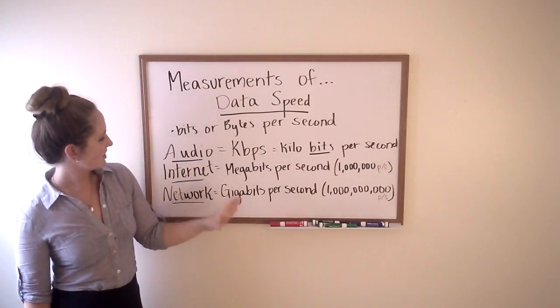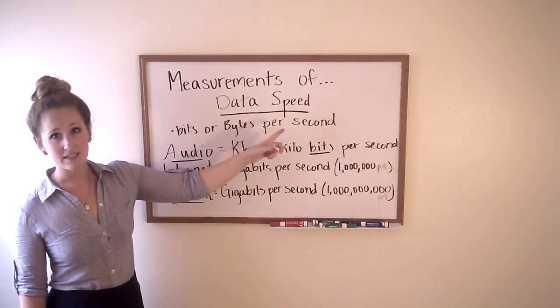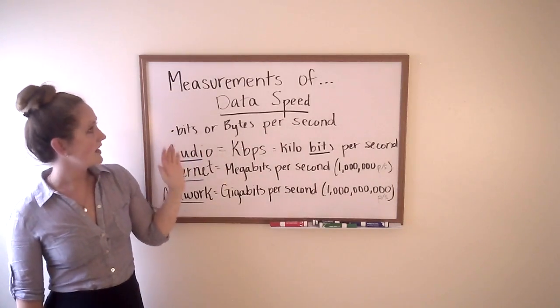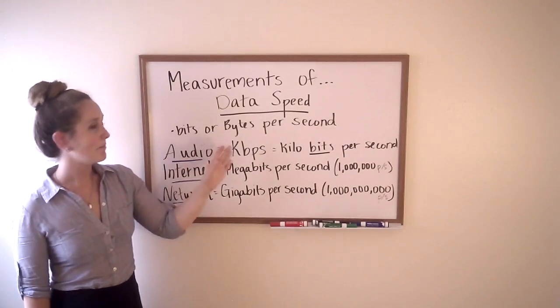Biggest distinction here, bits versus bytes. Data speed is generally measured in bits. Data size is measured in bytes.